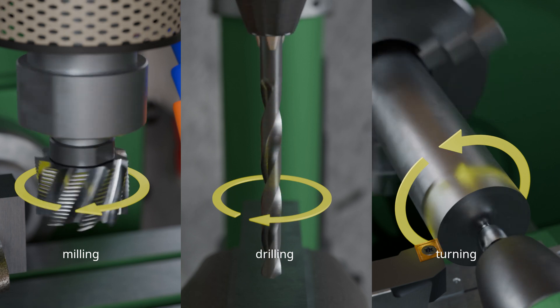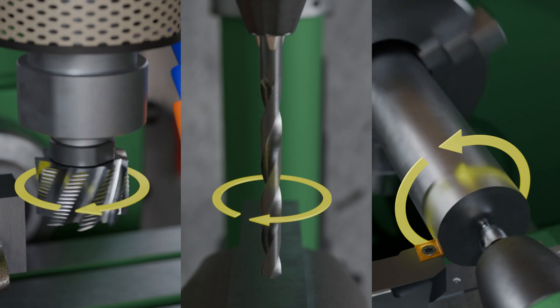An important parameter of these circular cutting movements is the speed at which the cutting edges move through the workpiece. This is referred to as the cutting speed VC and always relates to the outermost point of a circular cutting motion.